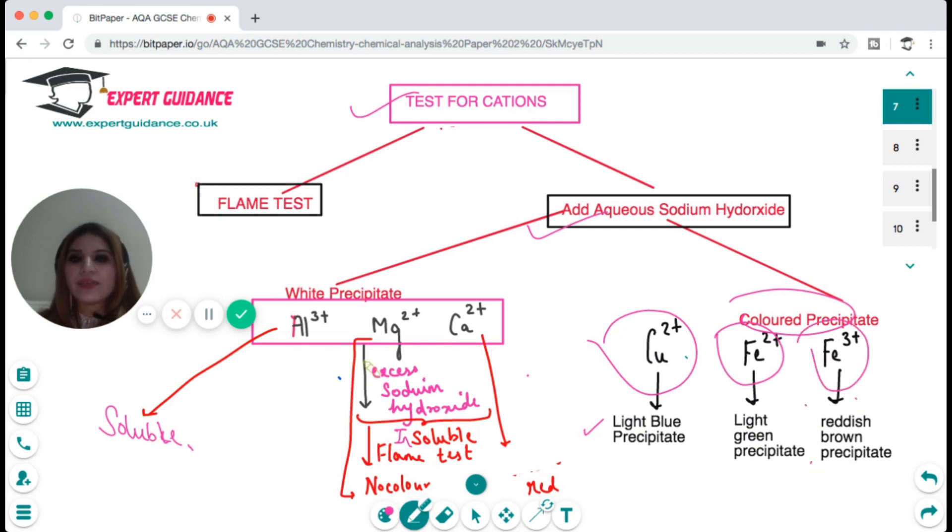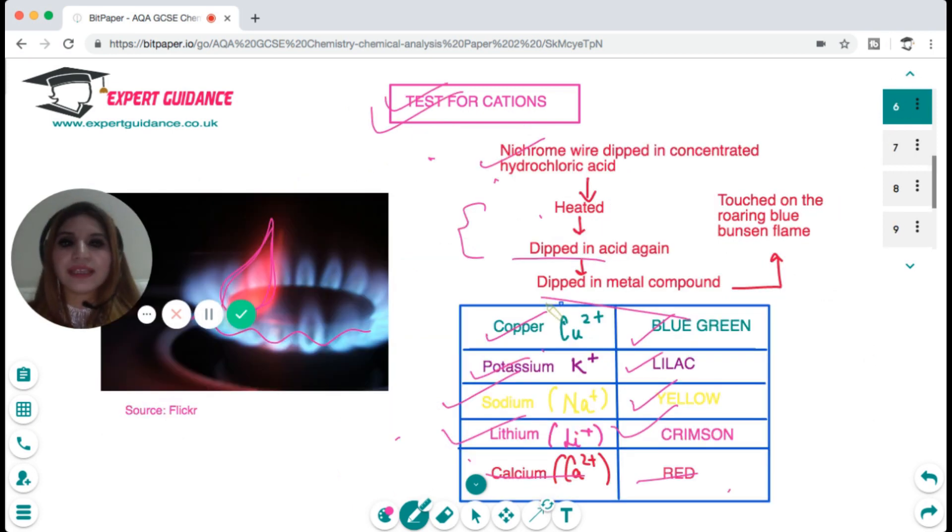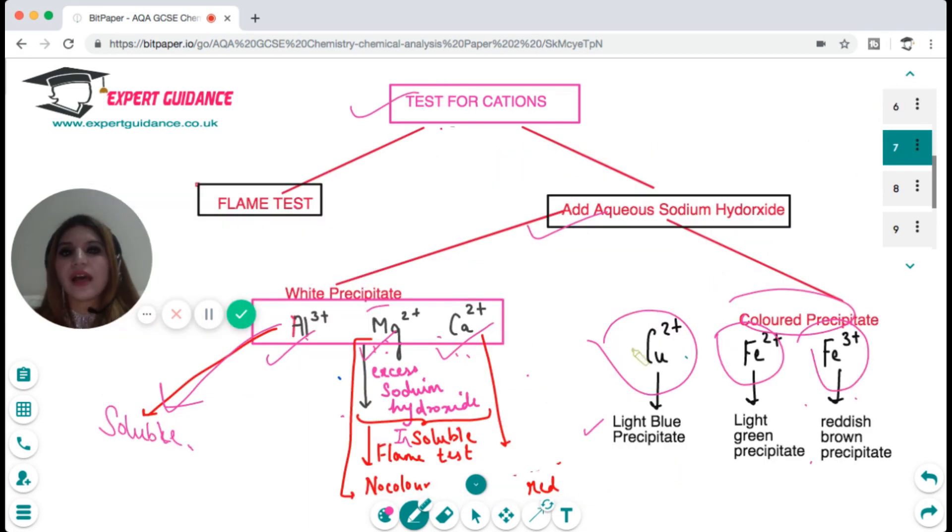When it is a white precipitate it is for aluminium, magnesium, and calcium. How do we distinguish between all these three white precipitates? We add excess sodium hydroxide and the aluminium precipitate will dissolve. On the other hand, magnesium and calcium will not dissolve and then we can do a flame test. Magnesium will not produce any color but calcium has the red color. Then we can distinguish between aluminium, magnesium, and calcium.